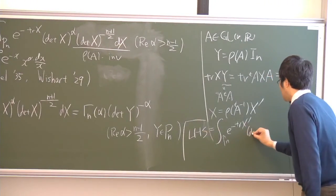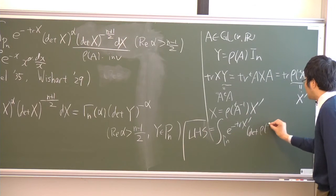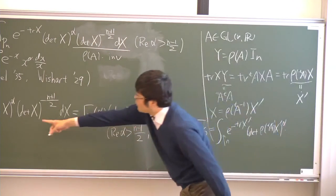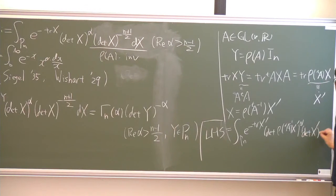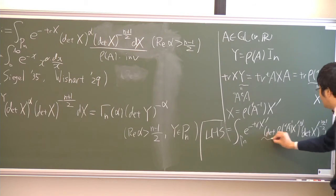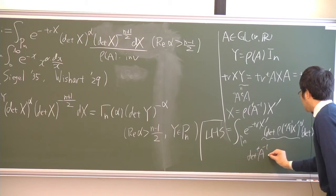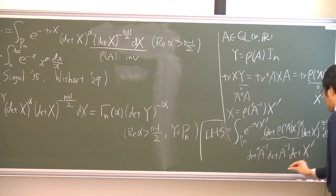So X equals ρ inverse X prime α. Then because of the invariance, we have determinant X prime. And this becomes determinant A, determinant X prime.